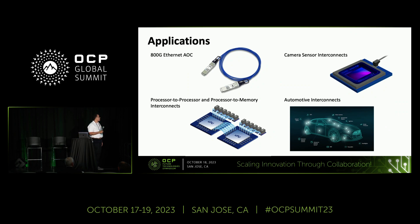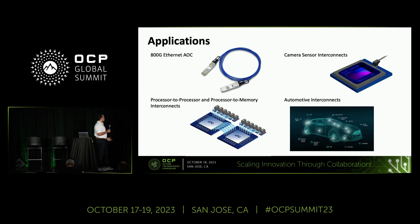The applications we are targeting: first, Ethernet active optical cable, where we control both sides and can deploy our multi-core fiber. Second — our main application — is chip-to-chip communication, where two interposers communicate through Light Bundle technology and CPUs communicate through HBM memory over Light Bundle. Third is automotive, which takes advantage of the high temperature tolerance of LEDs. Fourth is camera sensors, which require high bandwidth and low power.